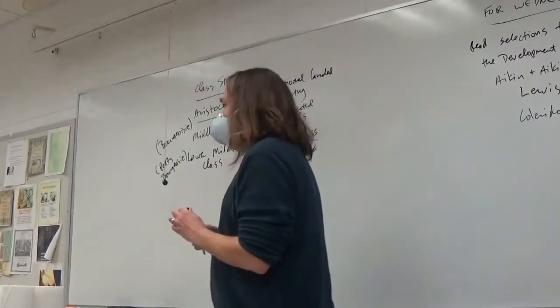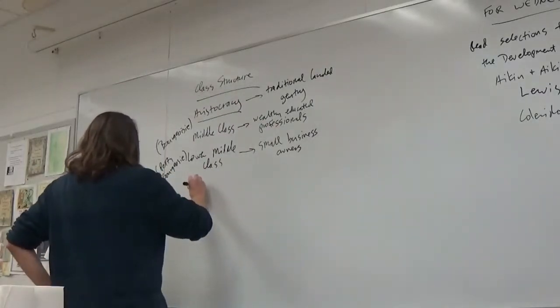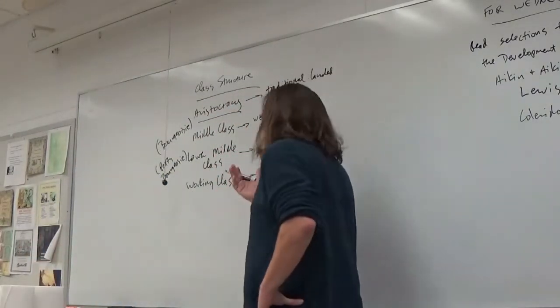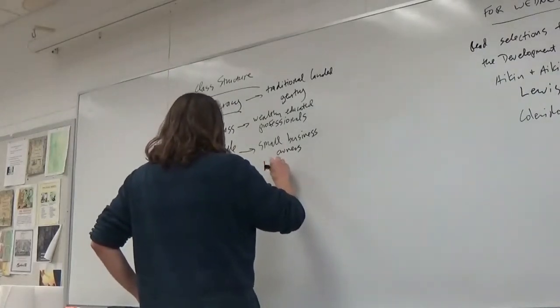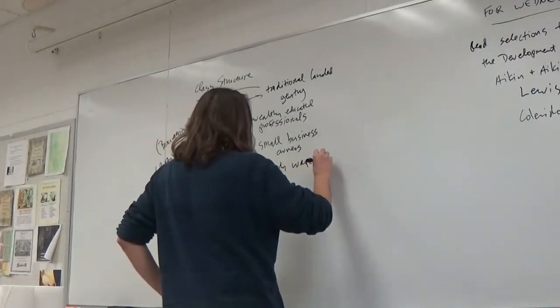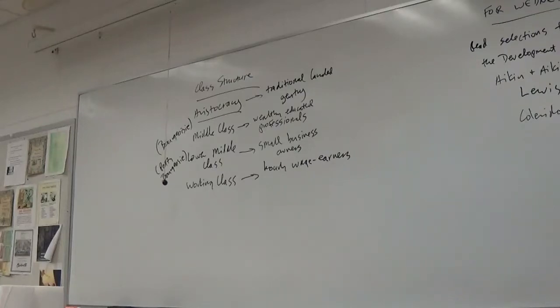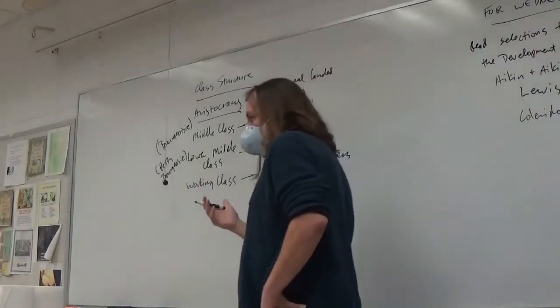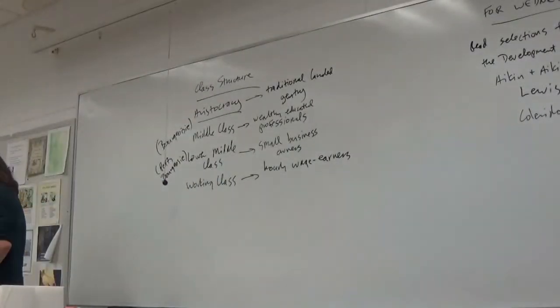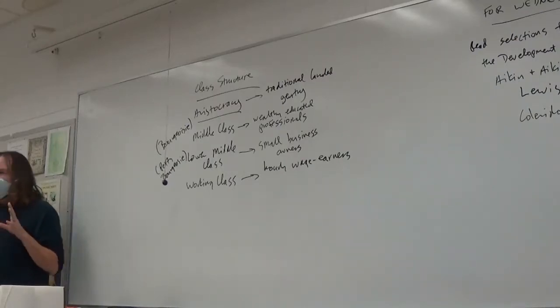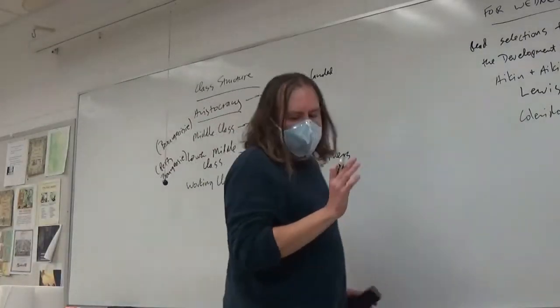At the bottom of the class structure pyramid are the working classes. And the working class basically consists of anybody who earns an hourly wage. It could be skilled labor, it could be unskilled labor. The point is that someone else pays them to work. They don't own their own business. They're not a stakeholder in their own business. And this is the way the European class structure has stood for a very, very, very long time. And this is basically the same picture that we have in the 18th century.